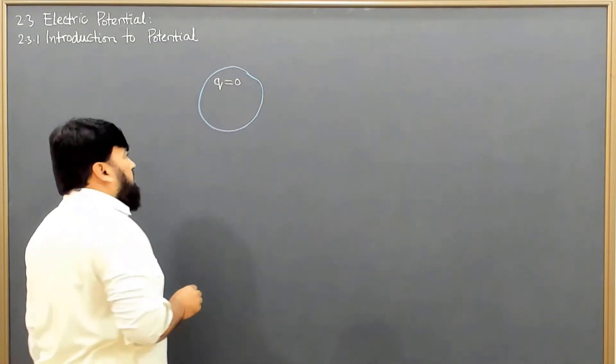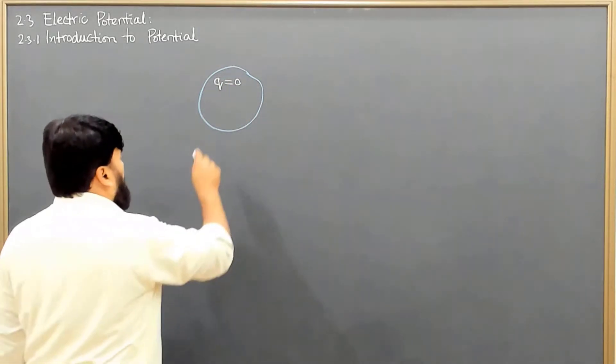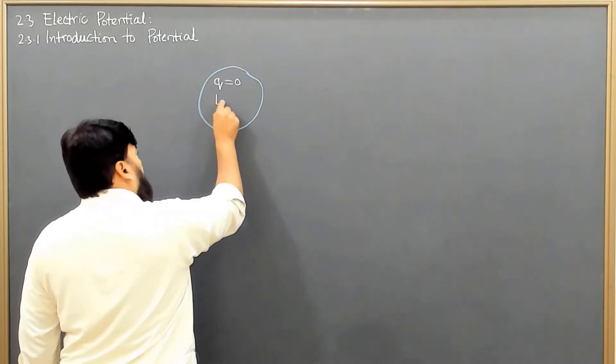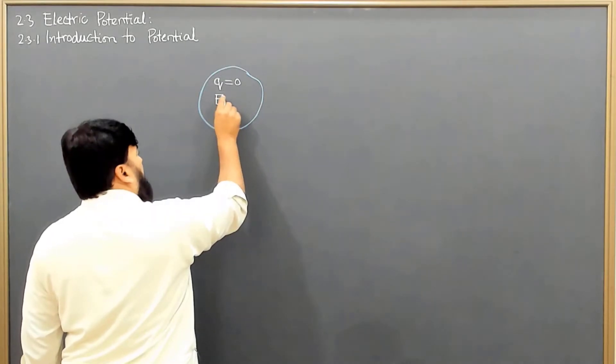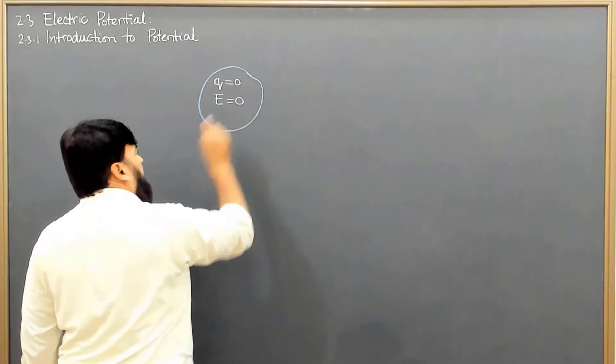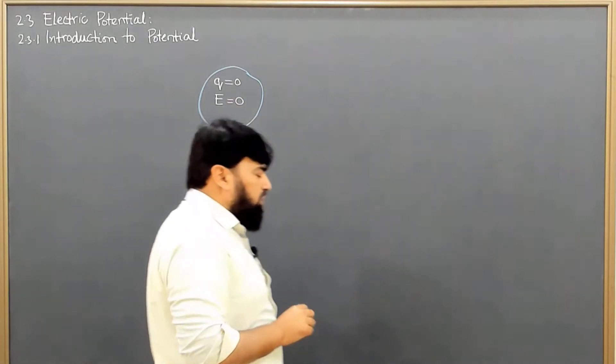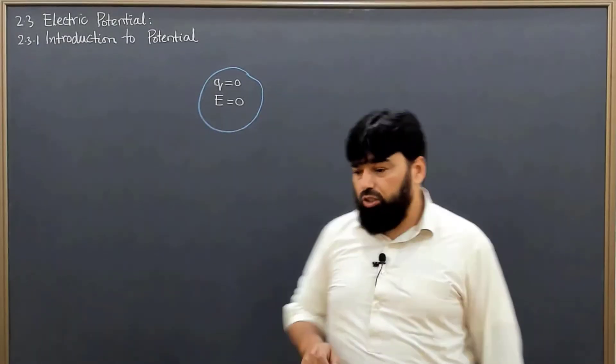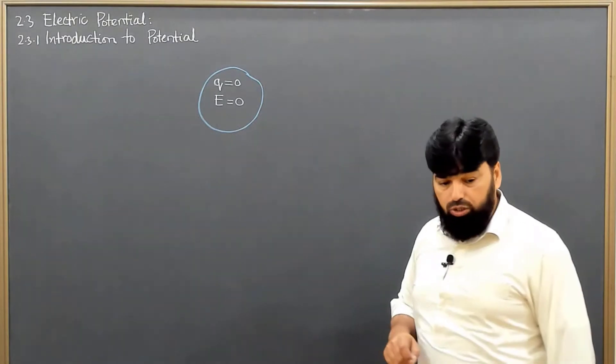The source charge is equal to zero. This will tell us from Coulomb's law we came to know that electric field will be zero in that region if the source charges are equal to zero.